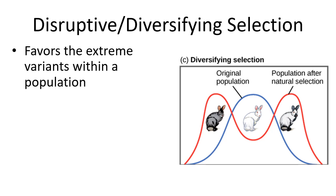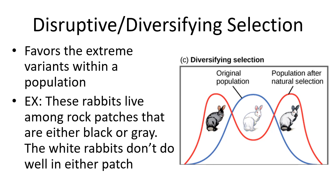Disruptive or diversifying selection favors two extremes over the intermediate type. For example, rabbits living among black and gray rocks: the white rabbit is selected against because predators can find it more easily, while the gray and black ones are more camouflaged. So you have two variants doing better than the original white population.